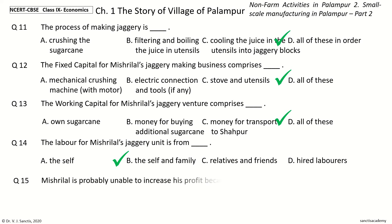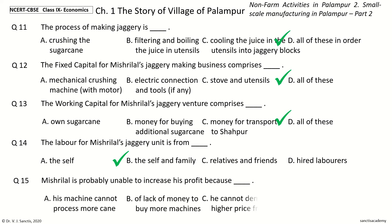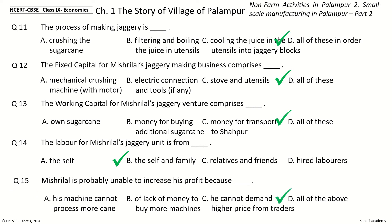Question 15: Mishrilal is probably unable to increase his profit because his machine cannot process more cane, or there is lack of money to buy more machines, or he cannot demand a higher price from traders. The answer is All of the above.